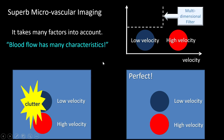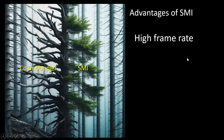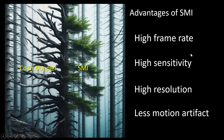The advantages of SMI over color Doppler: color Doppler is like delineating branches of a tree, while SMI delineates the leaves of a tree — with high frame rate, high sensitivity, higher resolution, and less motion artifact.